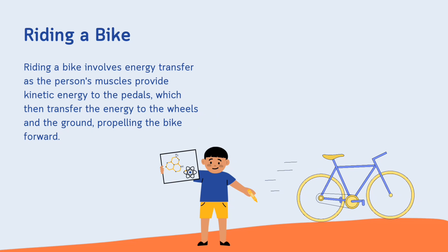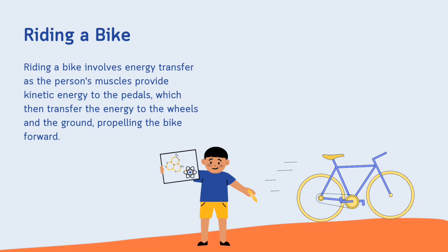The next example is riding a bike. Riding a bike involves energy transfer, as the person's muscles provide kinetic energy to the pedals, which then transfer the energy to the wheels and the ground, propelling the bike forward.